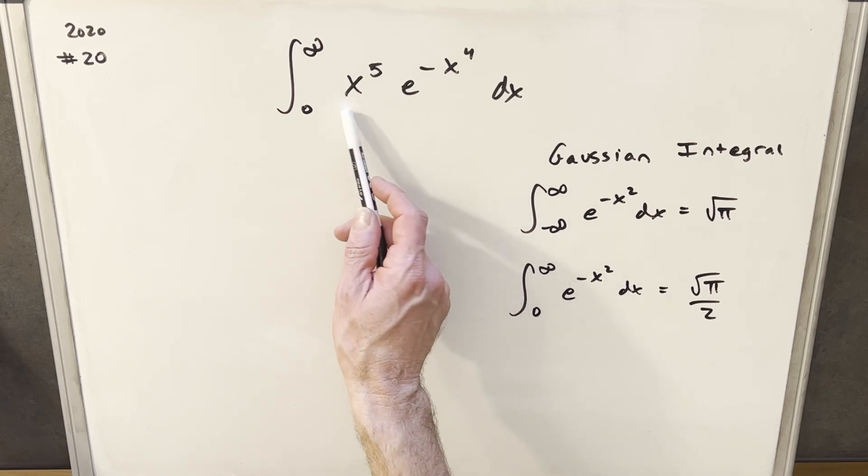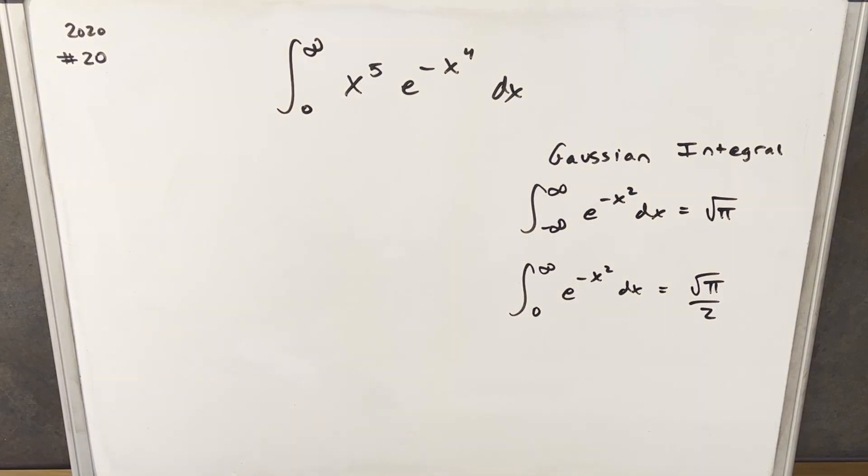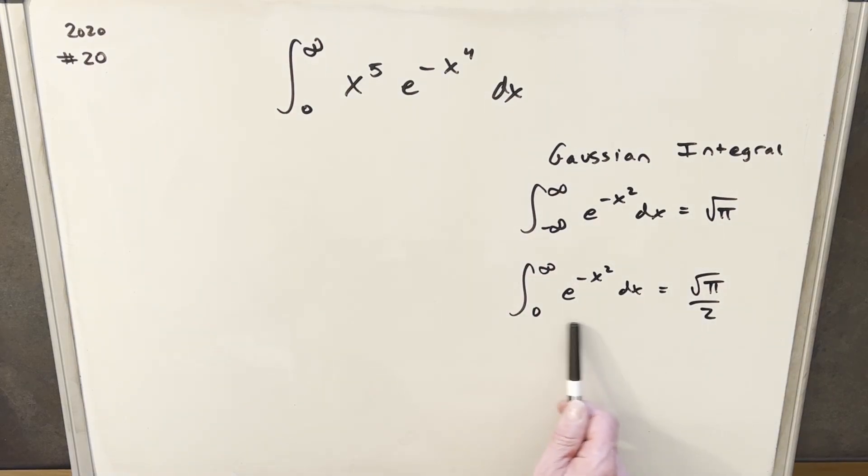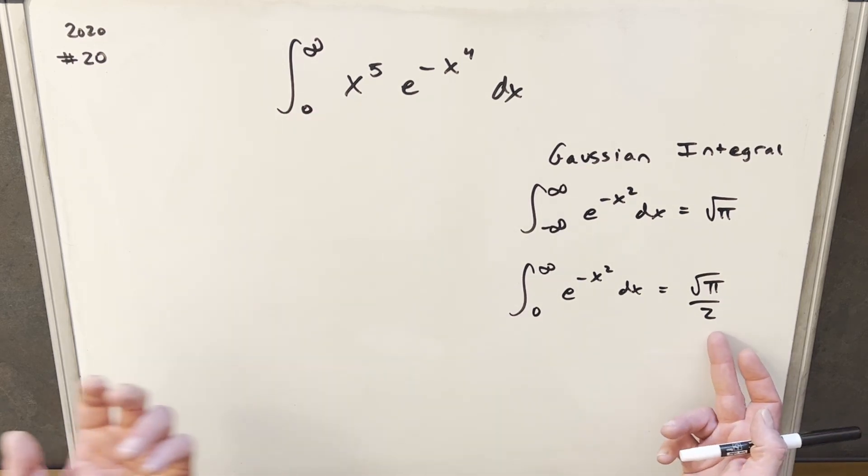Now in our integral it's definitely a little different, right? We've got this x to the fifth in front and the strategy I want to take with this is I think just to use substitution and some algebra to manipulate this to get this to look or to use this form somehow. And if we can get this into this form then we already have basically part of our answer right here. So let's see how this is gonna work.